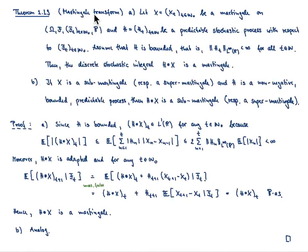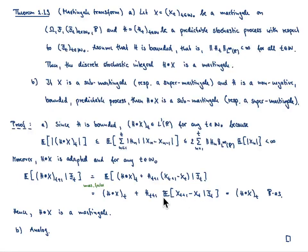That is why this theorem is called the martingale transform. Analogously, you can prove this theorem when x is a sub- or super-martingale. You see what you have to assume additionally: h should be non-negative. Otherwise, for a sub- or super-martingale, the conditional expectation is only larger or less than or equal to 0, and to keep the same direction of inequality, you need h to be non-negative.